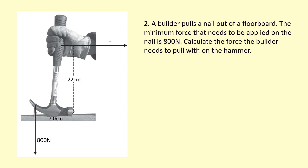A builder pulls a nail out of a floorboard. The minimum force needed on the nail is 800 newtons. Because the nail is pulled up with 800 newtons, the hammer is pulled down by 800 newtons according to Newton's third law. We need to calculate the force the builder needs to apply to the hammer. This is clearly a moments question because the forces aren't applied through a single point.